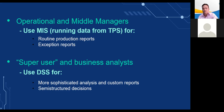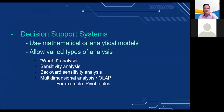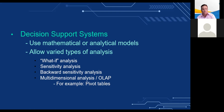Decision support systems, or DSS, rely more heavily on modeling than MIS, using mathematical or analytical models to perform what-if or other kinds of analysis. What-if analysis works forward from known or assumed conditions, allowing the user to vary certain values to test results or predict outcomes if changes occur. DSS is the business intelligence delivery platform for this category of users with the ability to support some structured decision making. Analytical models used include sensitivity analysis, backward sensitivity analysis, multidimensional analysis or OLAP, and pivot tables.